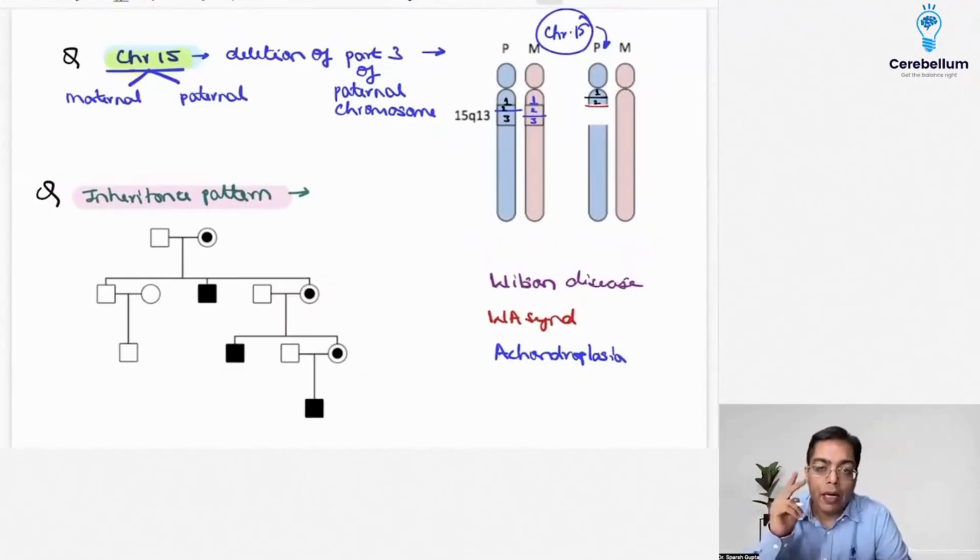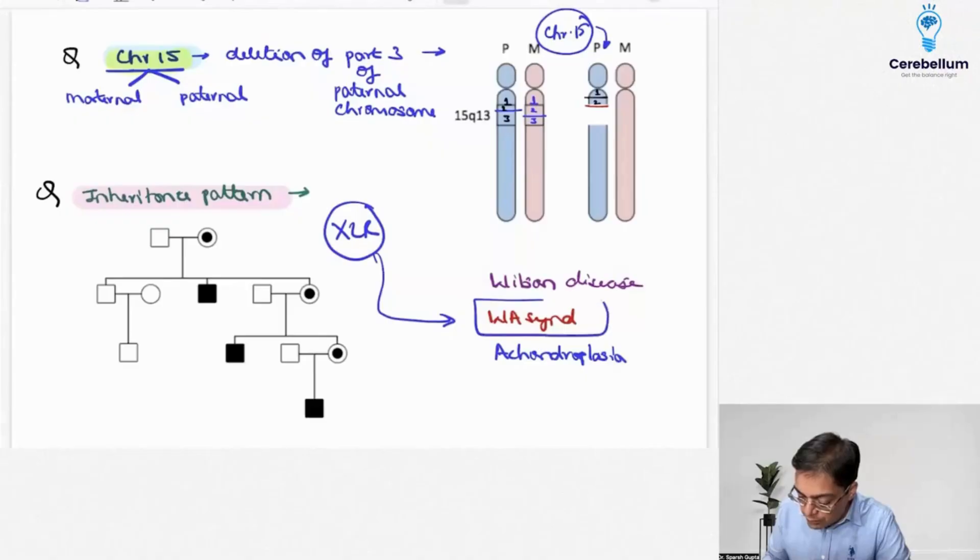You had to first decode the pattern of inheritance. We'll talk about it again in detail, and you were given certain options. One was an example of an autosomal dominant condition - achondroplasia. Then we had autosomal recessive condition in the form of Wilson's. Then we had a question which was making mention of Wiscott-Aldrich syndrome. This pattern of inheritance was referring to X-linked recessive, and knowing about that fact that Wiscott-Aldrich is an example of an X-linked recessive condition.